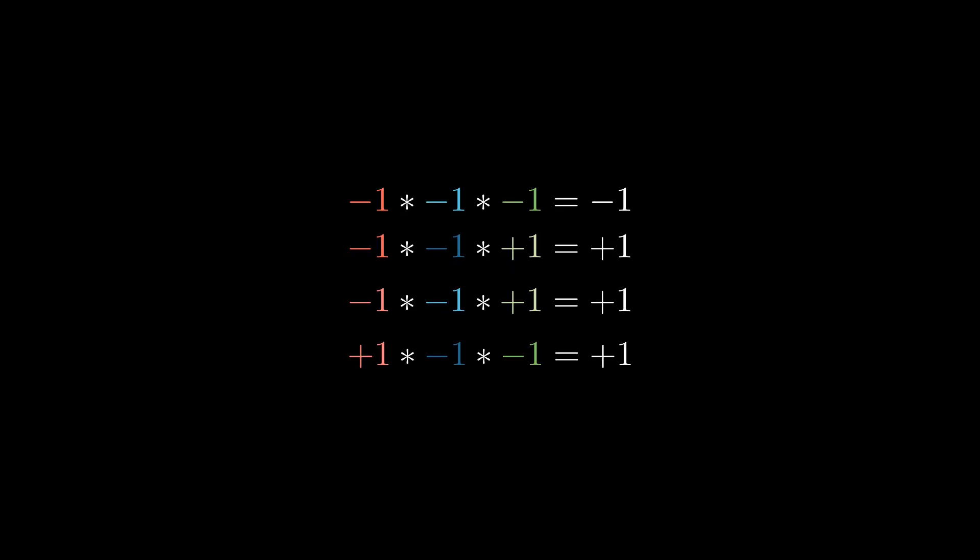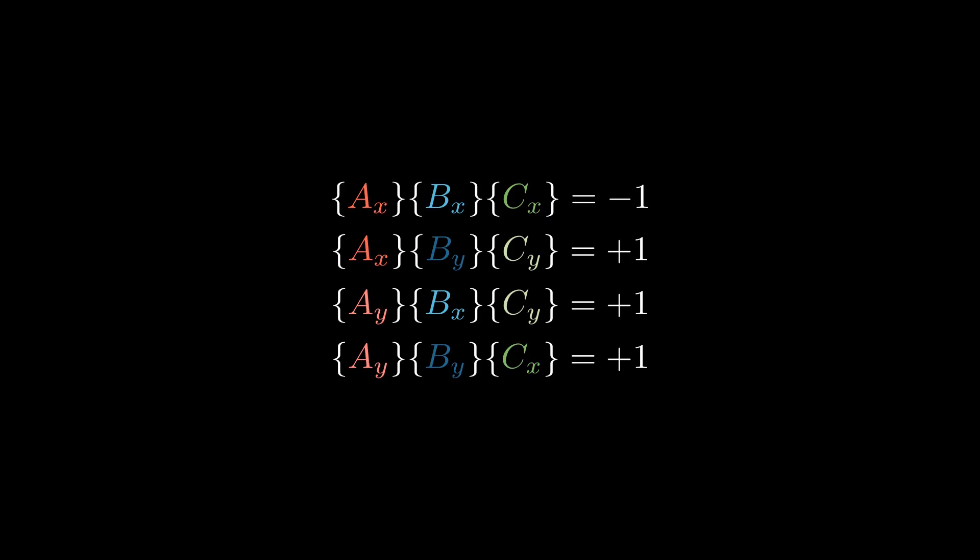Okay, okay, okay. So that original assumption of AX, BX, and CX all being negative didn't work out, but that's fine, that's fine. We still have another option. We can say that one of them, let's say AX, is negative one and the other two are positive.